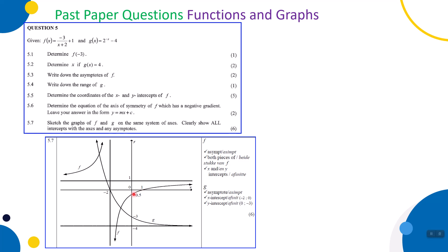For g, the exponential function, it has one horizontal asymptote at y = -4. Its x-intercept is at (-2, 0) and its y-intercept is at (0, -3). The arm goes from left to right downward, through the x-intercept and y-intercept, getting very close to the asymptote. You get a mark for the asymptote, a mark for the x-intercept at (-2, 0), and a mark for the y-intercept at (0, -3). That's 6 marks in total.